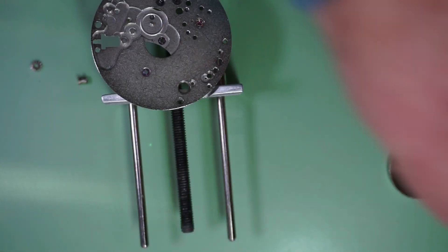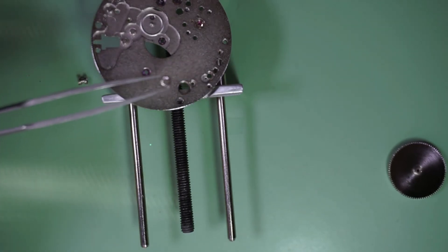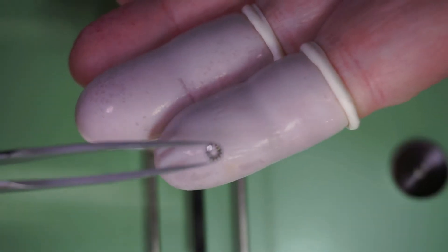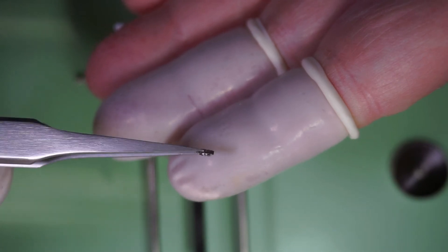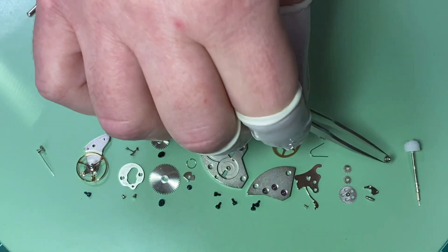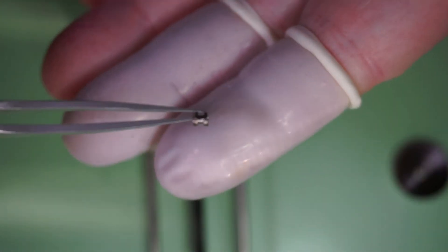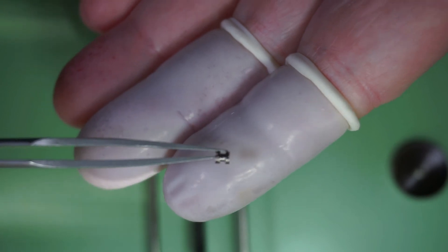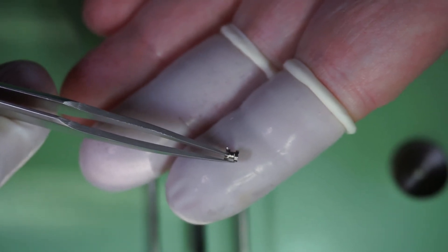And with that, the sliding clutch falls out, along with the winding pinion. And this is the winding pinion. This is what allows the stem to wind the mainspring in one direction, but in the other direction, it does not. And this is the sliding clutch, which helps to switch between the winding position of the stem and the watch setting position, the time setting.